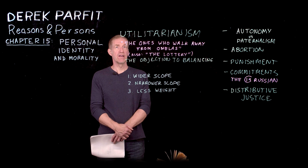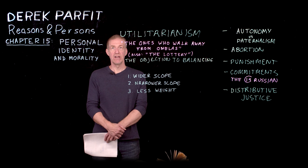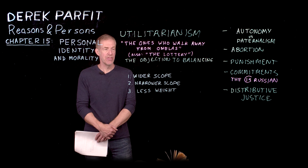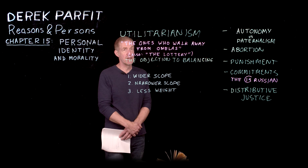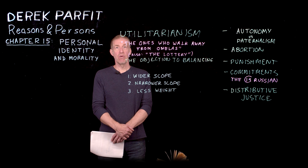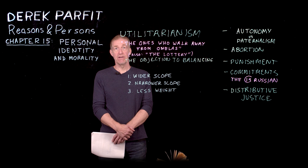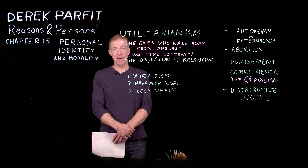All right, chapter 15 of Reasons and Persons. Chapter 14 was talking about rationality; now we're talking about personal identity and morality. And to introduce this, a few words about utilitarianism.